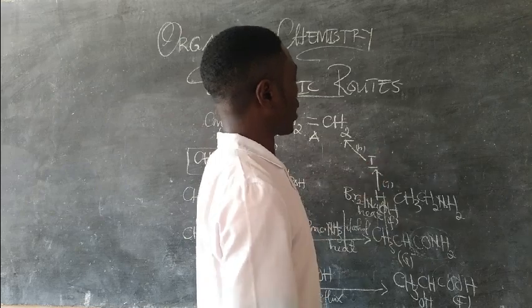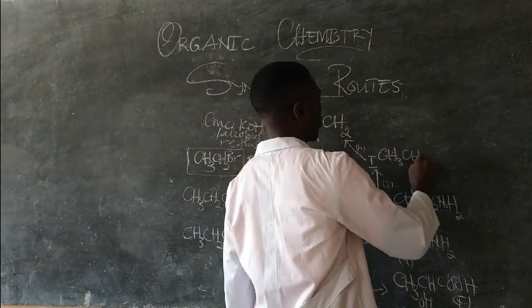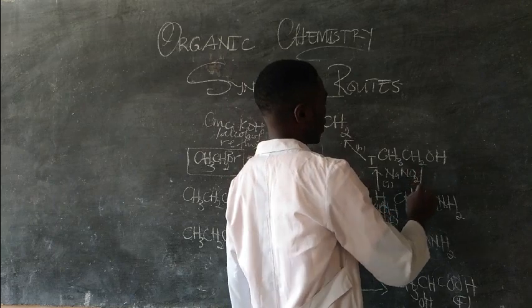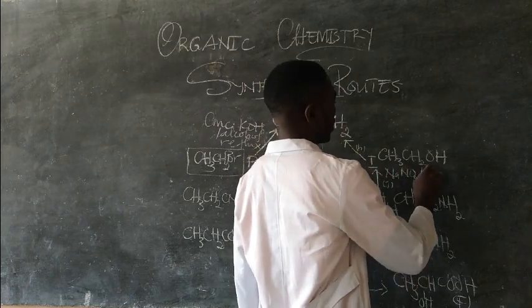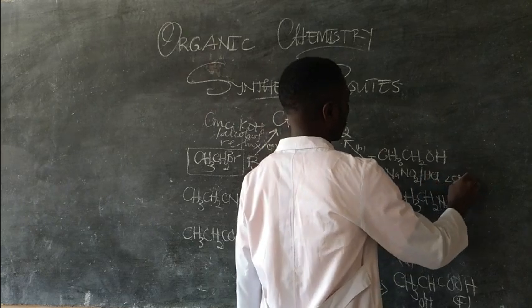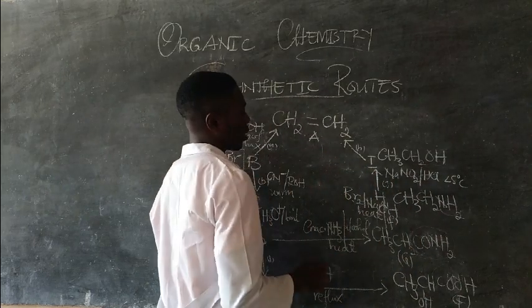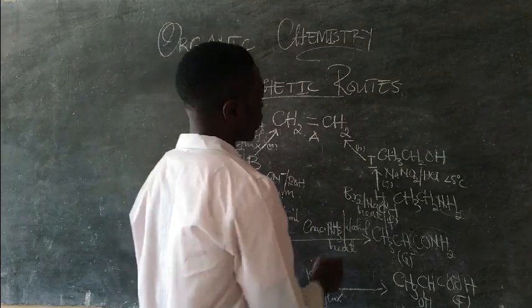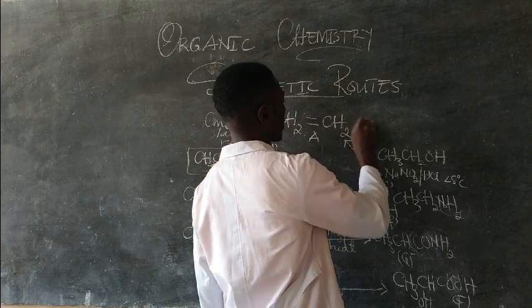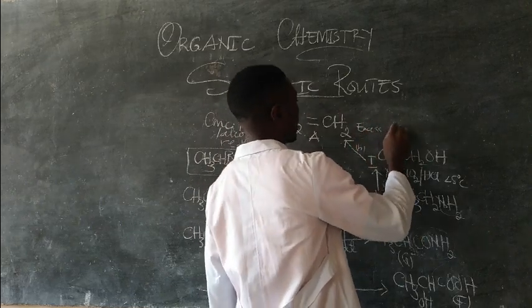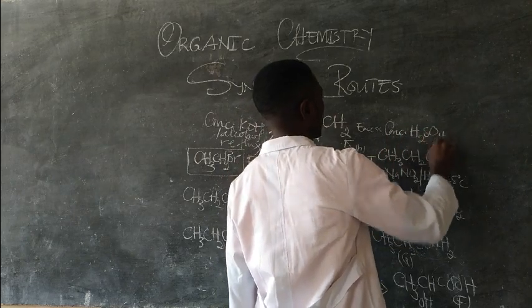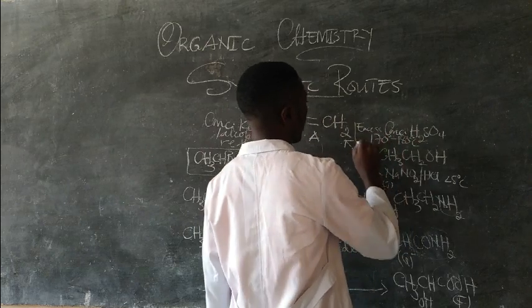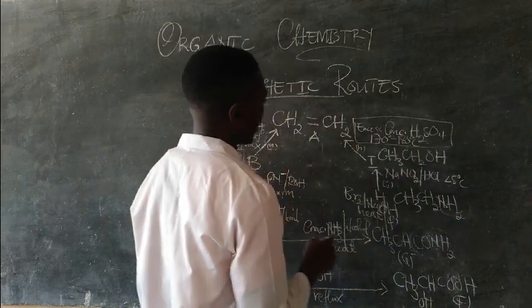This amine can be converted to an alcohol: CH₃CH₂OH. I use nitrous acid — that is sodium nitrite in dilute HCl below 5 degrees Celsius. This converts the amine group to an OH group, and I obtain my alcohol. From this alcohol, I can now dehydrate it to obtain the alkene A.